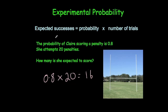So if you want to find out how many times you expect something to happen, you just times the probability. That could be theoretical or experimental, depending on the scenario, by the number of trials.